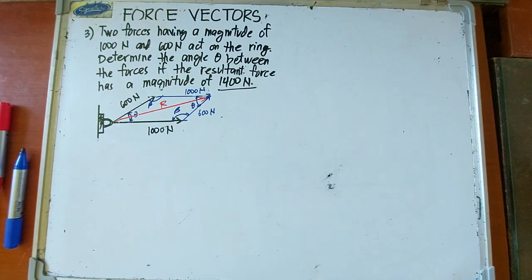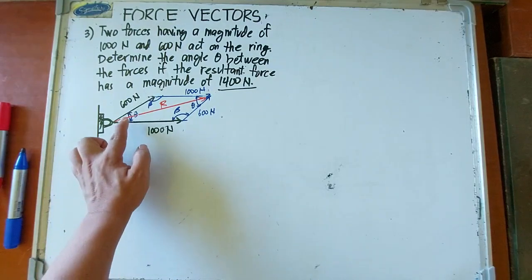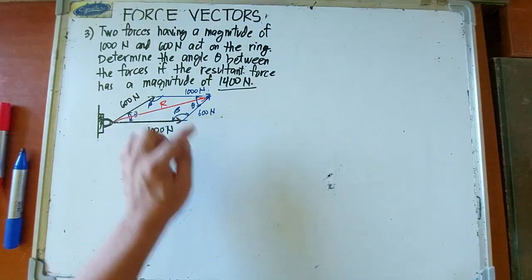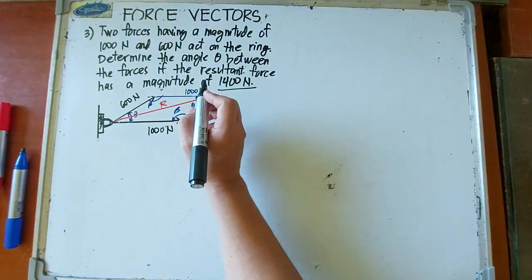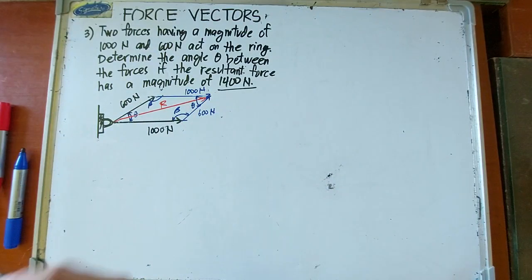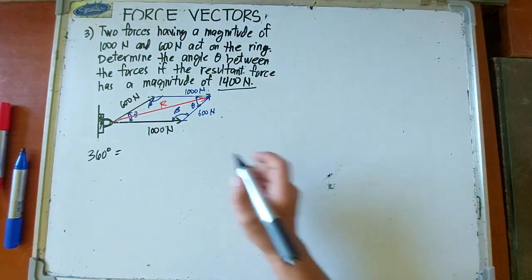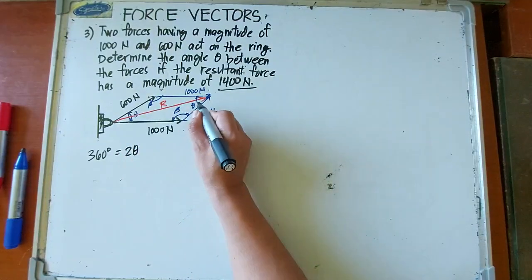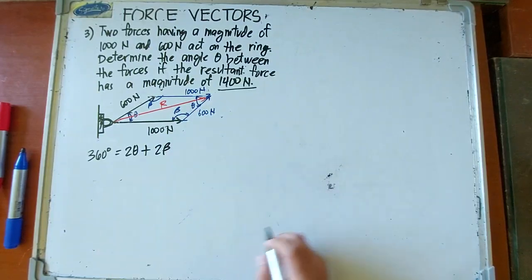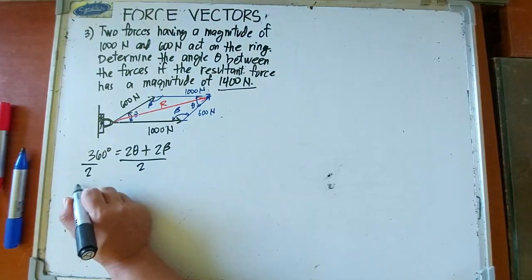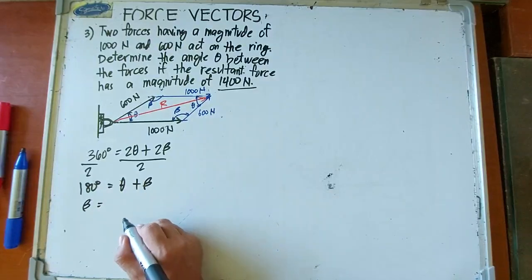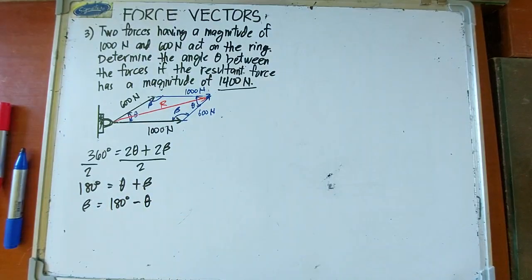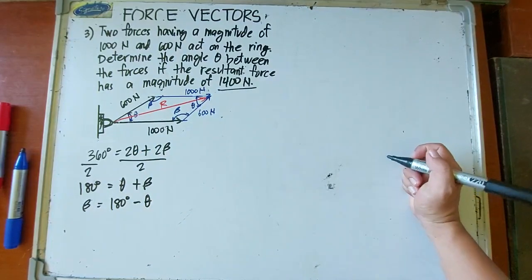Given three sides, we use cosine law to solve for the angle. I think we can directly solve for angle theta in terms of angle beta. We know that the total interior angles in a parallelogram is equal to 360 degrees, which is equivalent to twice of theta plus twice of beta. We can divide both sides by two, so this is 180 degrees equals theta plus beta. So beta in terms of theta is equal to 180 degrees minus theta.